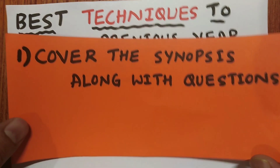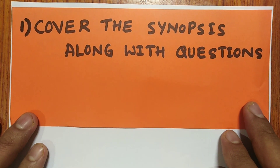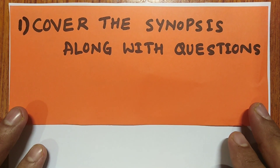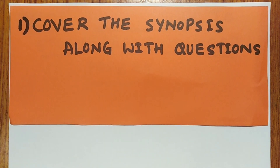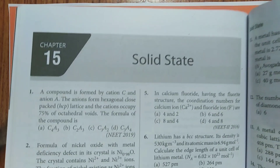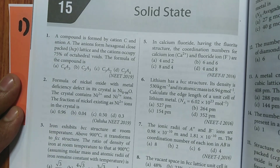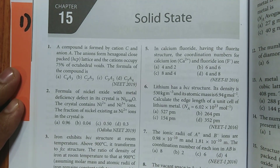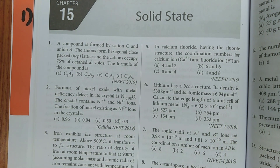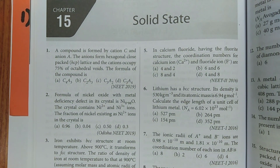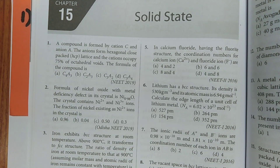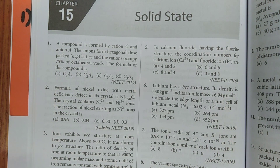The first point is very important: cover the synopsis along with the question. What is the meaning of this — how to cover the synopsis along with the question? I will give you one example and explain. For example, I have considered one chapter — solid state — and I have taken NEET previous year papers. I will show you the techniques to read.